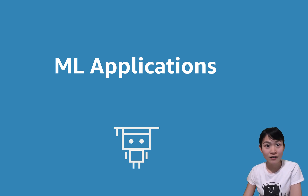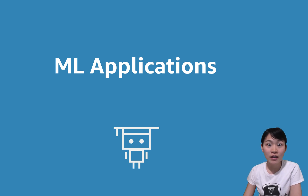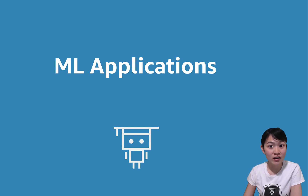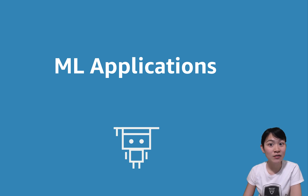After understanding the fundamentals of the ML Life Cycle and knowing the four big macro steps, let's get started with the first step: the problem formulation. We'll see a variety of types of machine learning problems and their applications within Amazon and elsewhere.